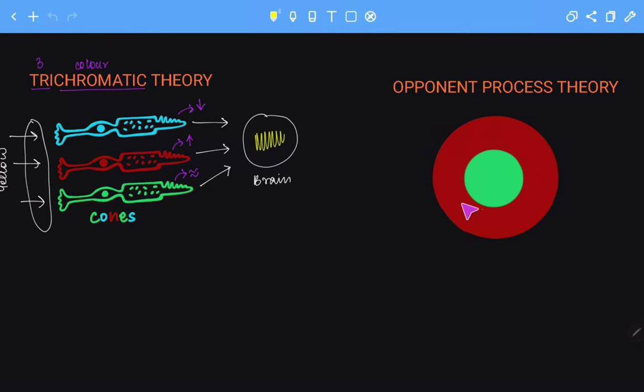There is activation of one component of this complex and deactivation of the other in order to perceive any kind of color. So this was the trichromatic theory and the opponent process theory.